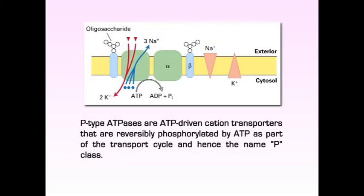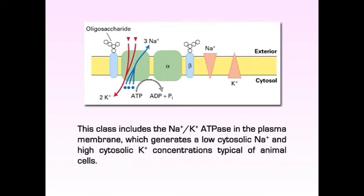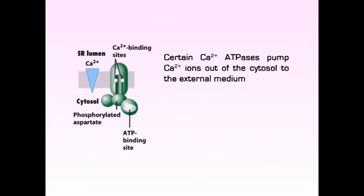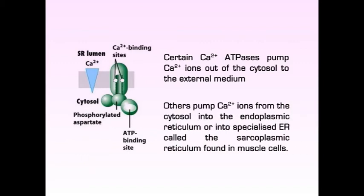However, some ABC transporters also transport ions. P-type ATPases are ATP-driven ion transporters that are reversibly phosphorylated by ATP as part of the transport cycle, hence the name P class. This class includes the sodium-potassium ATPase in the plasma membrane, which generates low cytosolic sodium ion and high cytosolic potassium concentration typical of animal cells. Certain calcium ion ATPases pump calcium ions out of the cytosol to the external medium, while others pump calcium ions into the endoplasmic reticulum or the sarcoplasmic reticulum found in muscle cells. Another member of the P class found in acid-secreting cells of the mammalian stomach transports protons out of and potassium ions into the cell.